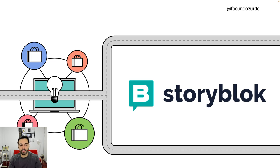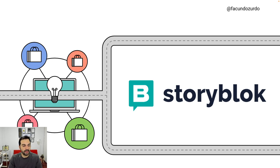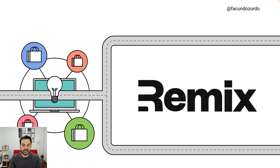I created this example using Storyblok. Storyblok is a headless content management system that helps us create and manage the content of our website. We can structure content in a component approach, making it easy to link the content we create with the visual representation and the different React components in our project. Storyblok also offers a real-time visual editor that helps editors and marketers create content and see in real-time how it will look before publishing to the production environment. For the front end, we are using Remix because it's super easy to implement this project and strategy using the features Remix offers.